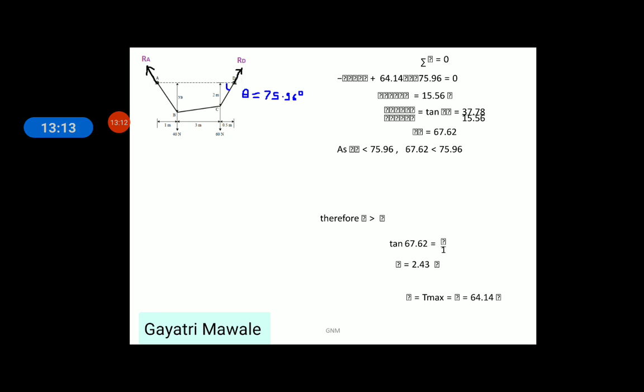One more thing is asked as unknown in this problem which is sag at B point that is YB. Once we know angle theta A, then I can write down tan of that angle is equals to vertical distance YB divided by horizontal distance 1 meter. This give me YB equals to 2.43 meter.